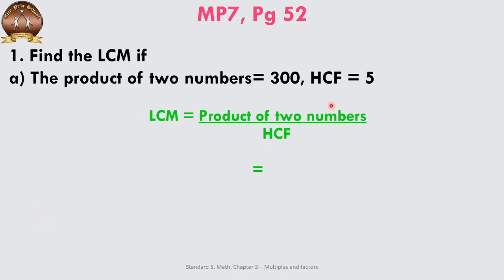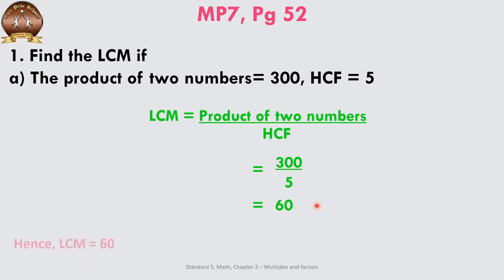The product of the two numbers is known to us — it is 300 — and the HCF is 5. We divide 300 by 5, which gives us 60. So the LCM of the two numbers is 60.